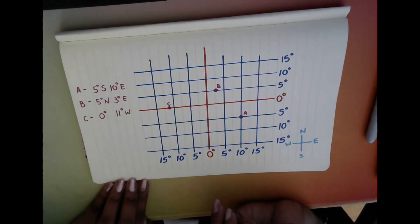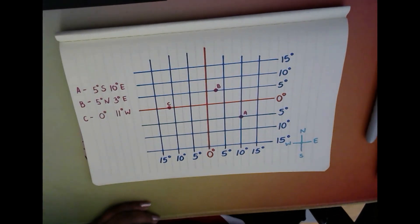Alright, and yeah, that is pretty much it. So that is how to work out latitude, longitude, and basic coordinates on a map. If I really helped you and you enjoyed it, don't forget to leave a comment, like, and subscribe.